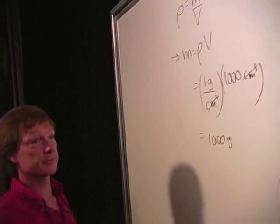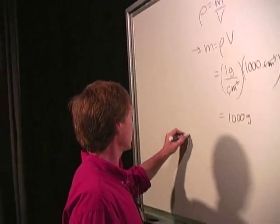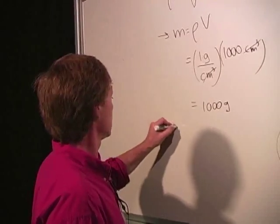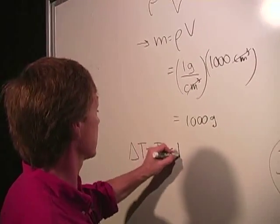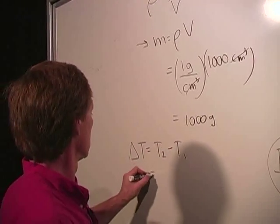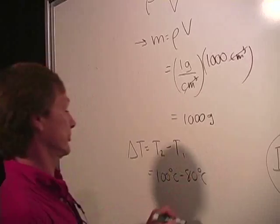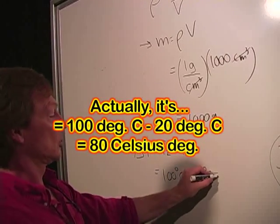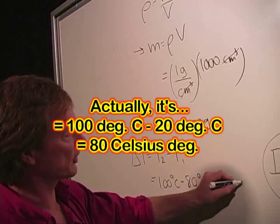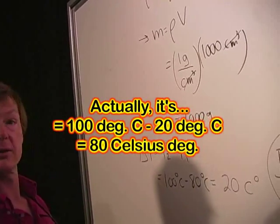Now, the temperature difference, I need to work an equation for that. It's the final temperature, T2, minus initial temperature, T1, which is 100 degrees Celsius minus 80 degrees Celsius, which would be 20. Now, it's a temperature difference, so it would be 20 Celsius degrees.